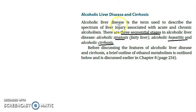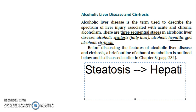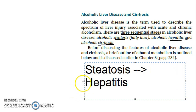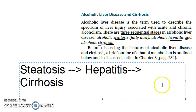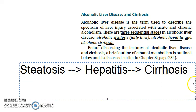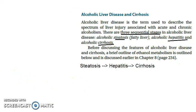So these are the sequential stages in alcoholic liver disease. The sequential stages are: steatosis, hepatitis, and cirrhosis. This is the sequence in alcoholic liver disease.